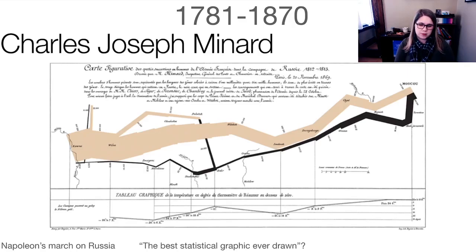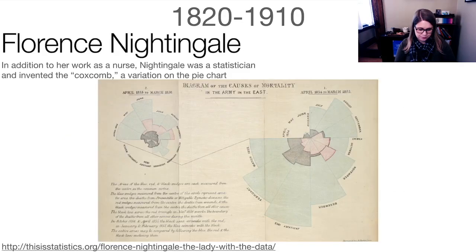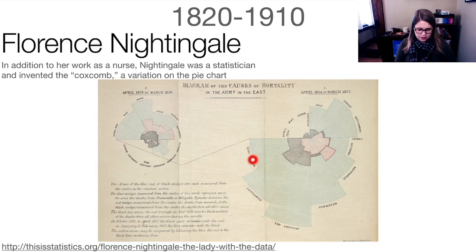This graphic includes a ton of information — a timeline, the number of people, a temperature graph for the return march, and relative proportions. I think it requires some careful attention to read, which isn't necessarily a bad thing, but it certainly makes it a more challenging visualization. Around the same time, Florence Nightingale was creating new data visualizations. You probably know her name because she was a nurse, but she was also a statistician. She invented the Coxcomb chart, a variation on the pie chart where the segments go out further if the group is larger. It shows causes of mortality in the army in the east.